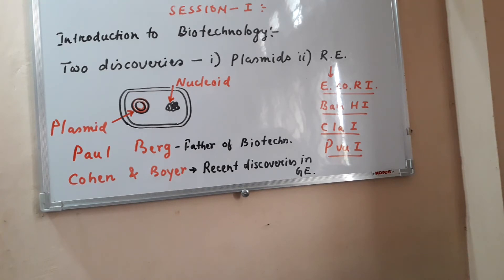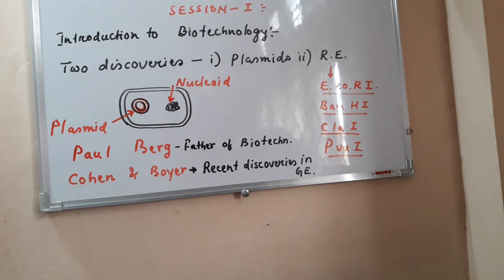Lysozyme is one of the most important enzymes to obtain plasmid from bacteria. Similarly, for fungi we can use chitinase, because chitin is the cell wall component that fungi contain.